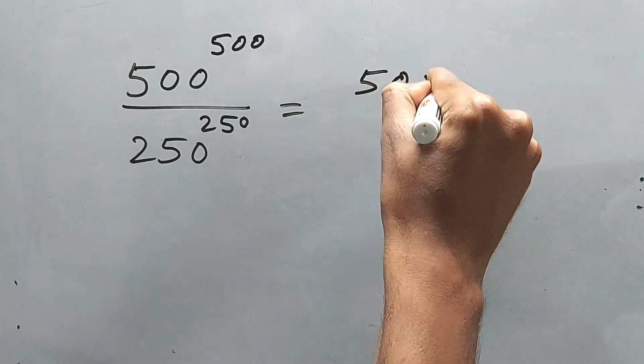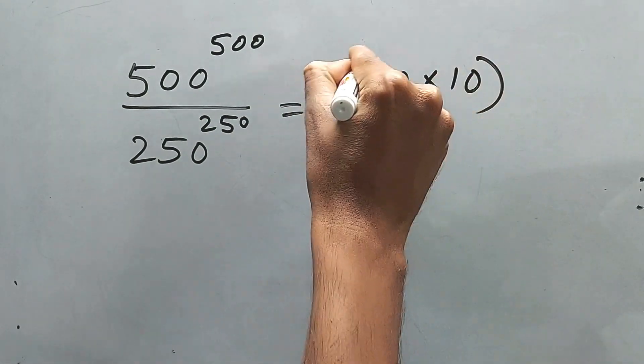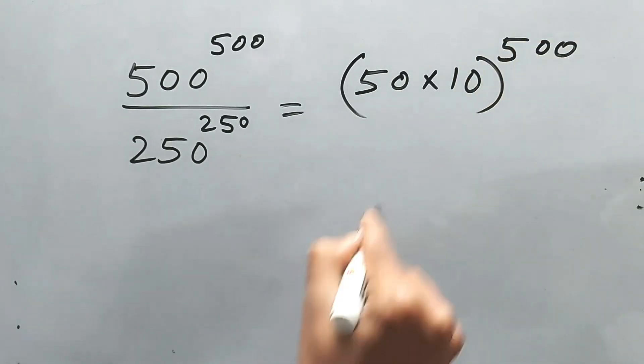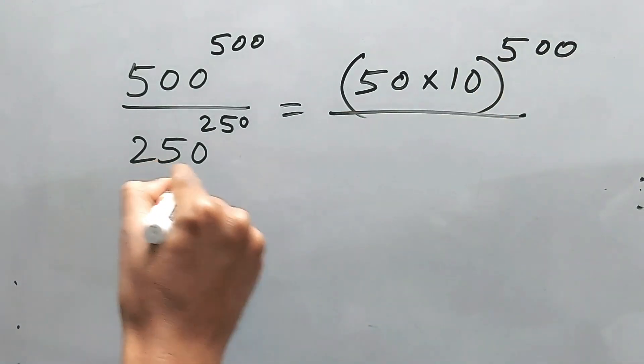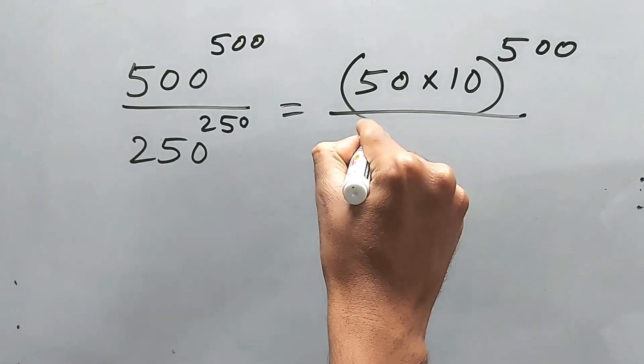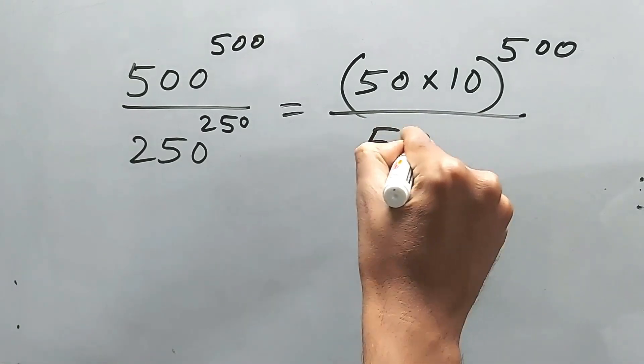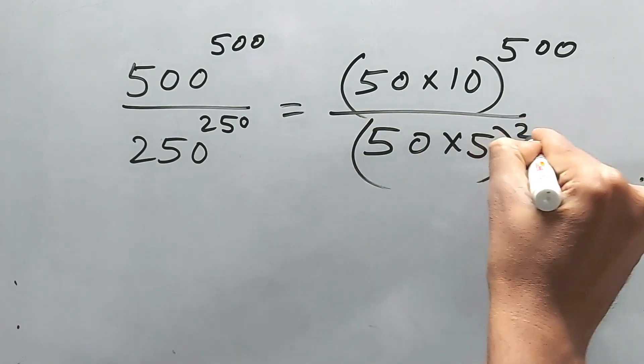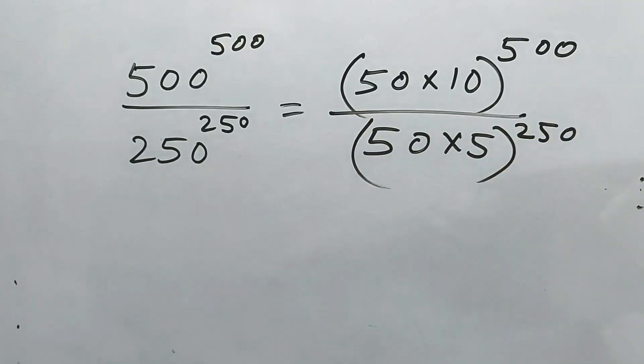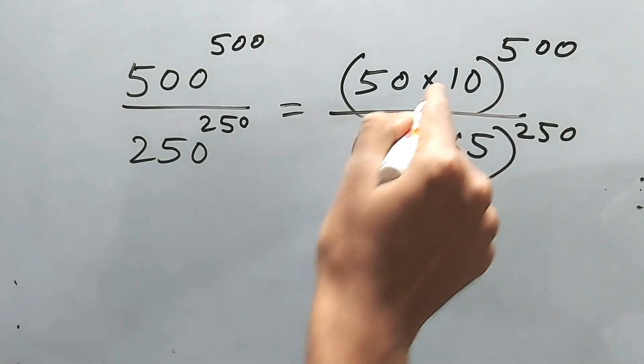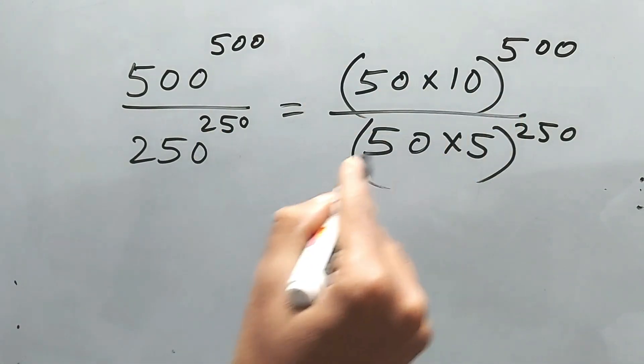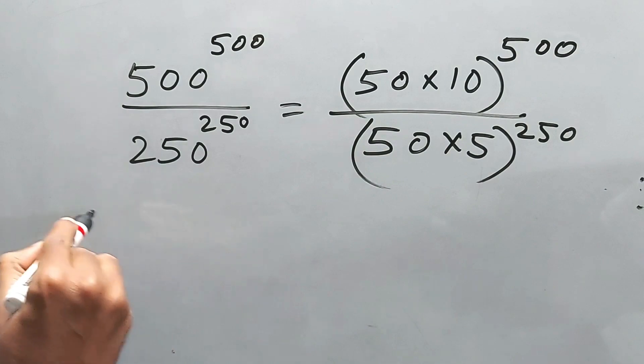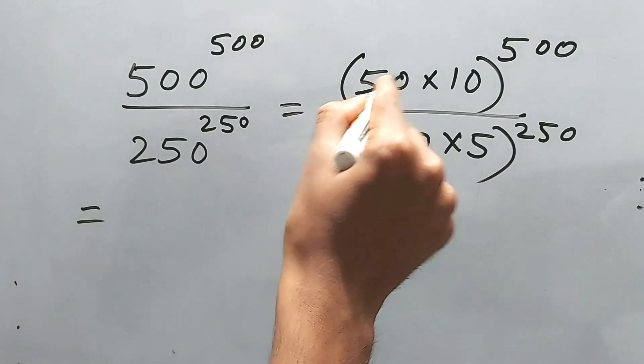So directly we can write 50 times 10 to the power 500, and at the bottom definitely we can write 50 times 5 to the power 250. Now this 10 means 2 times 5, right?